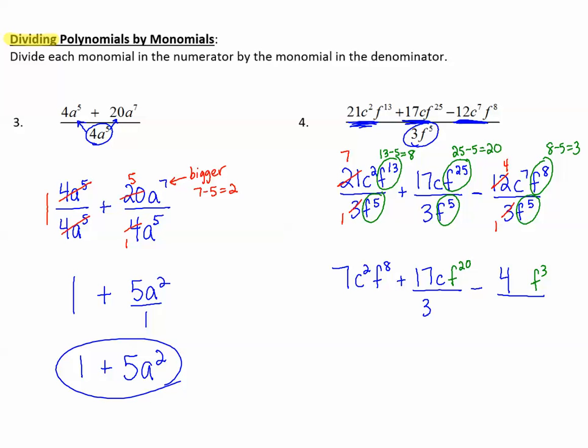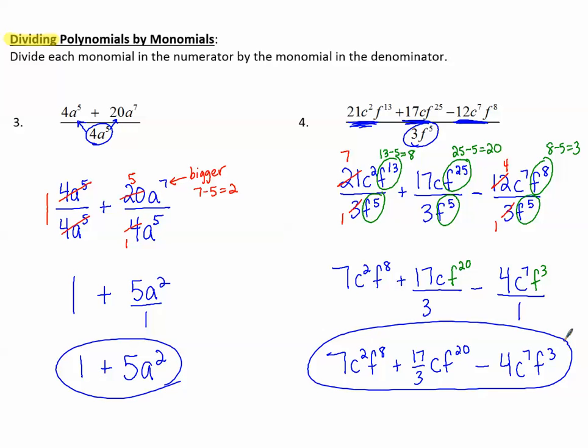Oops, let's not forget to write the c⁷. 1 is left in the denominator, but I don't have to write it. So let's write what we have simplified. 7c²f⁸ + (17/3)cf²⁰ - 4c⁷f³. And there's our simplified answer.